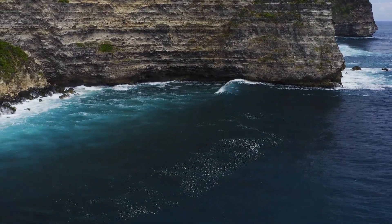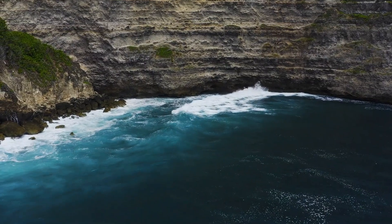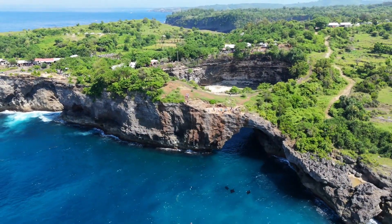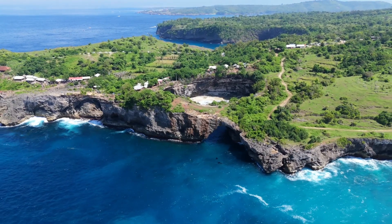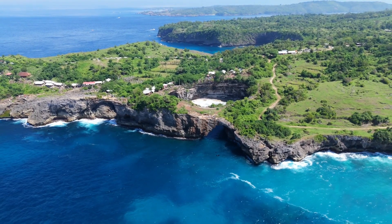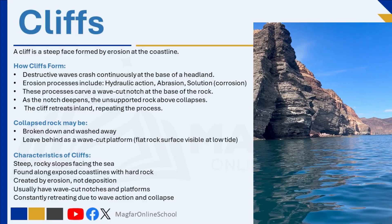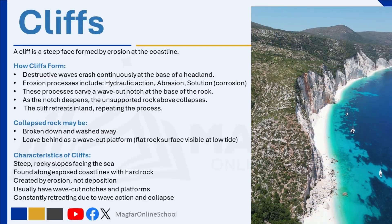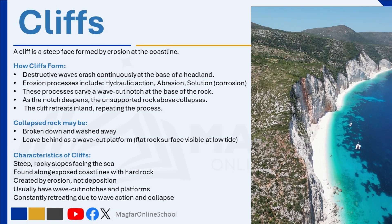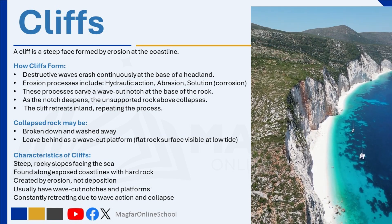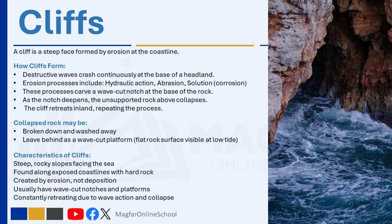A cliff is a steep or even vertical rock face found along coastlines. These impressive landforms are mainly shaped by the force of wave erosion, and they're most common in places where powerful, destructive waves strike against resistant rock like chalk, limestone, or granite. So how do cliffs actually form? It all starts when destructive waves, which are high-energy and have strong backwash, repeatedly crash into the base of a coastal slope or headland. These waves don't just splash — they work like natural tools. Through hydraulic action, abrasion, and solution, they slowly erode the bottom of the rock.